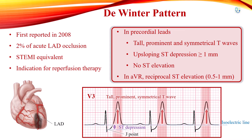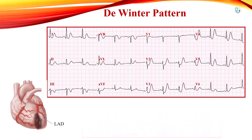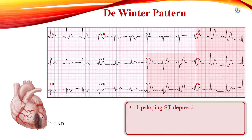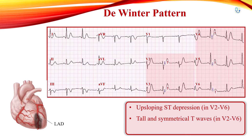In this EKG, the DeWinter pattern can be observed. Leads V2 to V6 show upsloping ST segment depression with tall and symmetrical T waves. There is a reciprocal slight ST elevation in AVR.